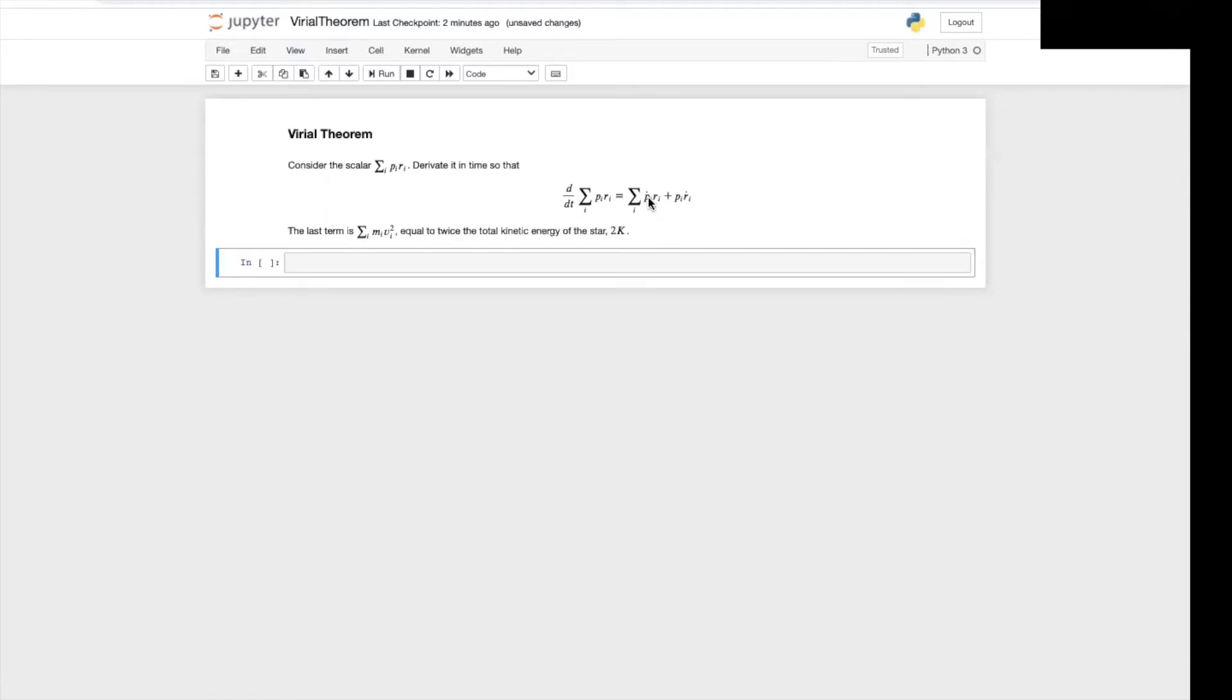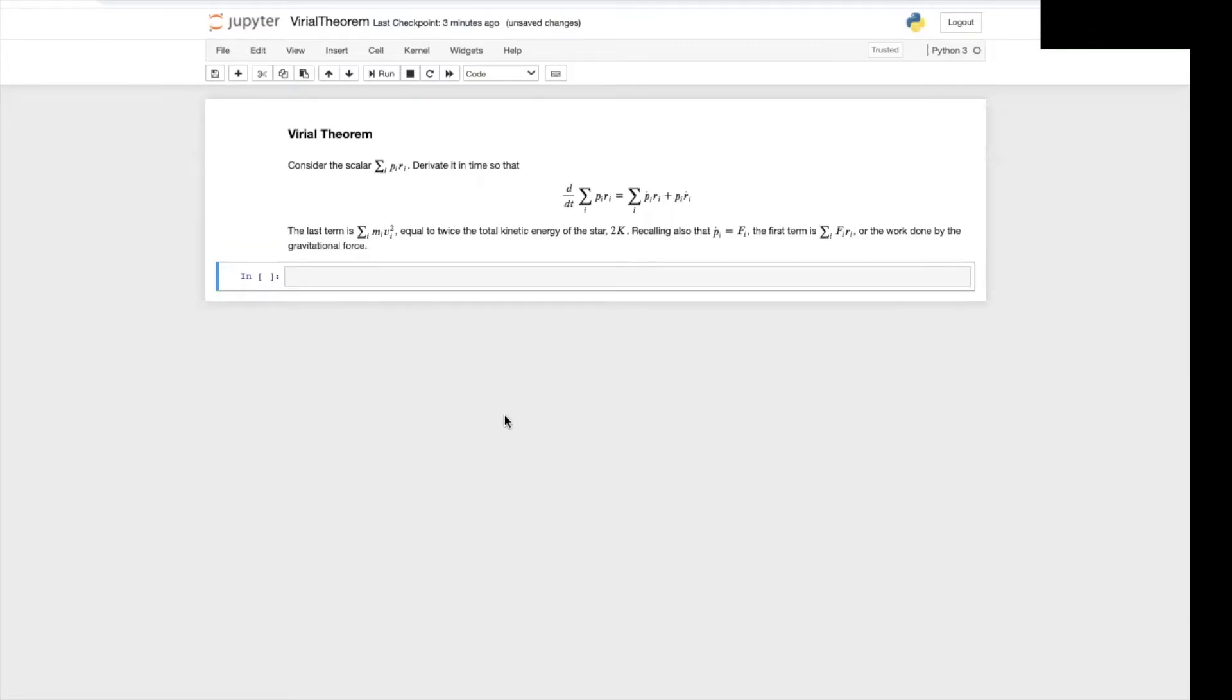Now for the p dot, if you recall that this is the force, then the first term is the sum of the force times the position, which is the work done by the gravitational force. So let's call this quantity w for work.